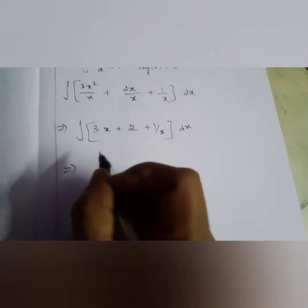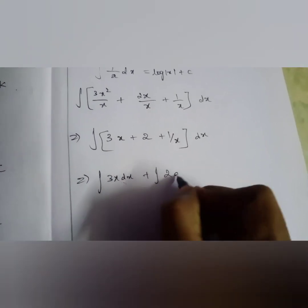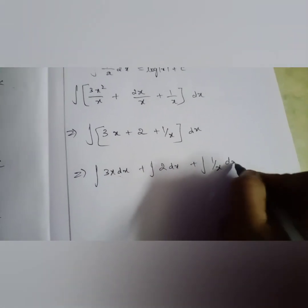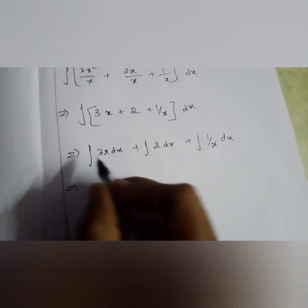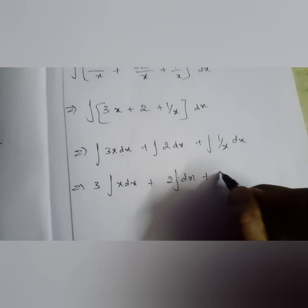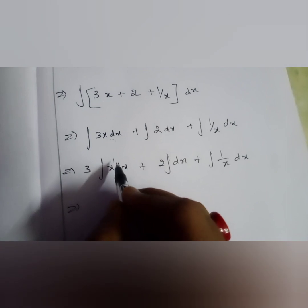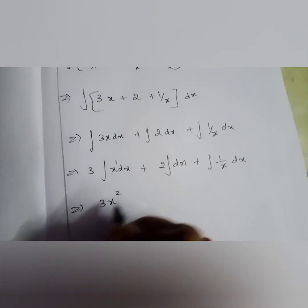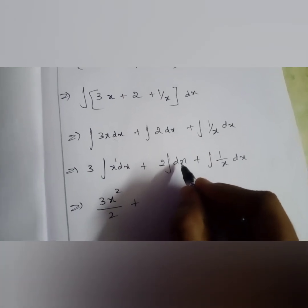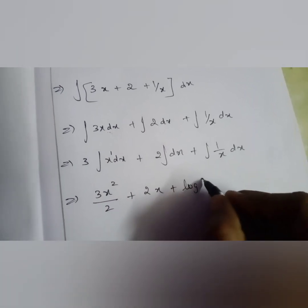Using the property that we can split and write the integrals, this becomes ∫3x dx + ∫2 dx + ∫(1/x) dx. Taking constants outside: 3∫x dx + 2∫dx + ∫(1/x) dx. Integrating each term gives 3x²/2 + 2x + log x + c. This is how you integrate using the Type 2 formulas.